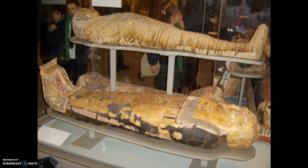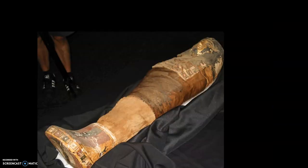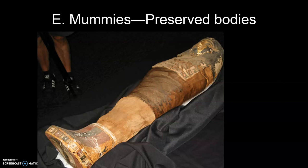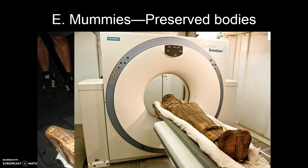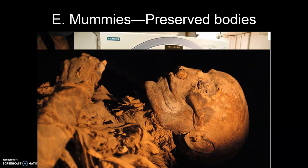Here we see sarcophagi in all different states of preservation. Within the sarcophagi are mummies — preserved bodies. We don't like tearing open sarcophagi if we don't have to, so here we see an MRI machine being employed to see what's inside without damaging the outer wrapping. You can see how well the bodies were preserved — thousands of years later you can still make out facial features and a perfectly preserved ear. The Egyptians knew what they were doing.